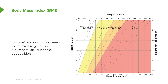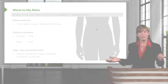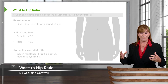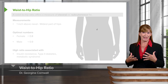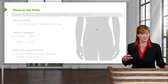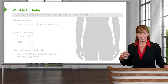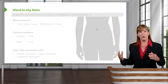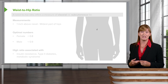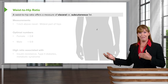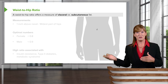Body mass index does get some criticism, but it remains the standard. Another parameter we use in conjunction with body mass index — beyond blood testing, which reveals metabolite levels — is waist to hip ratio, which is a quick measure. You can probably get a good gauge by looking at someone, but there is a calculation for it. The point of waist to hip ratio is about differentiating between visceral and subcutaneous fat.